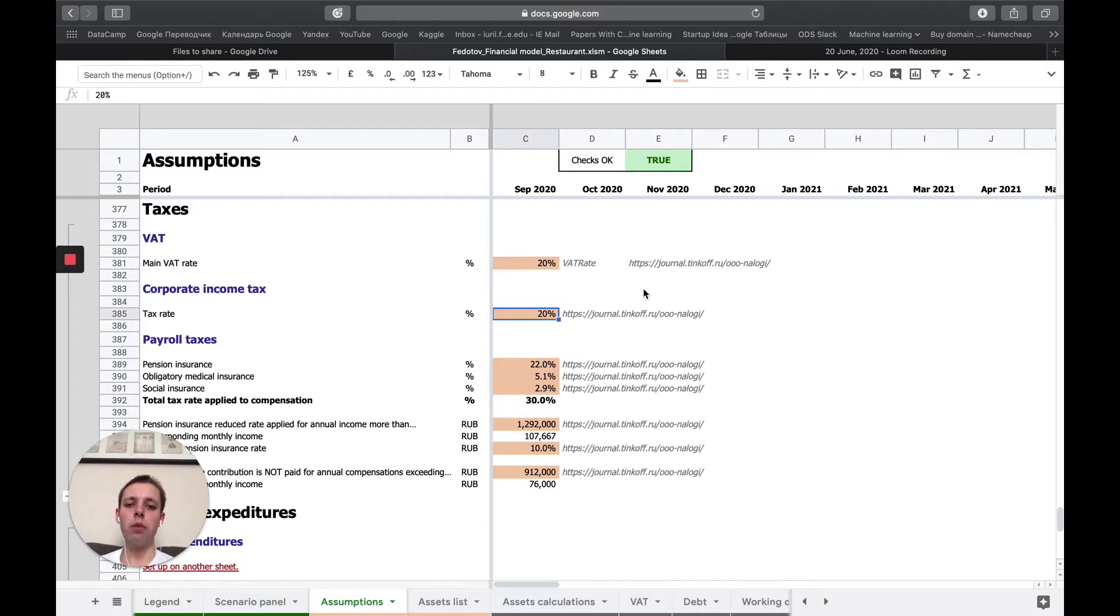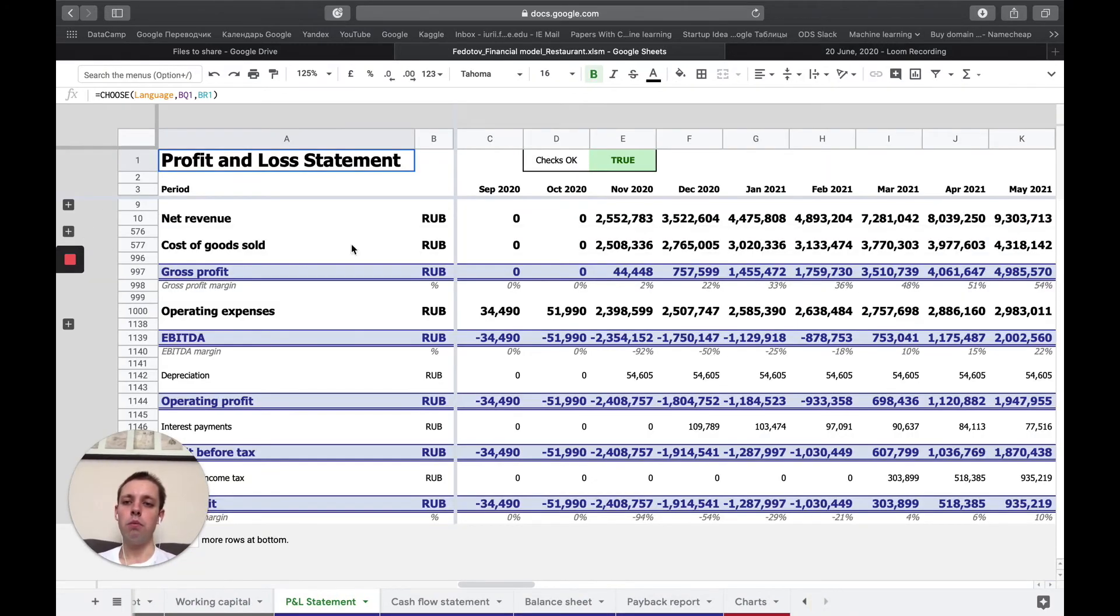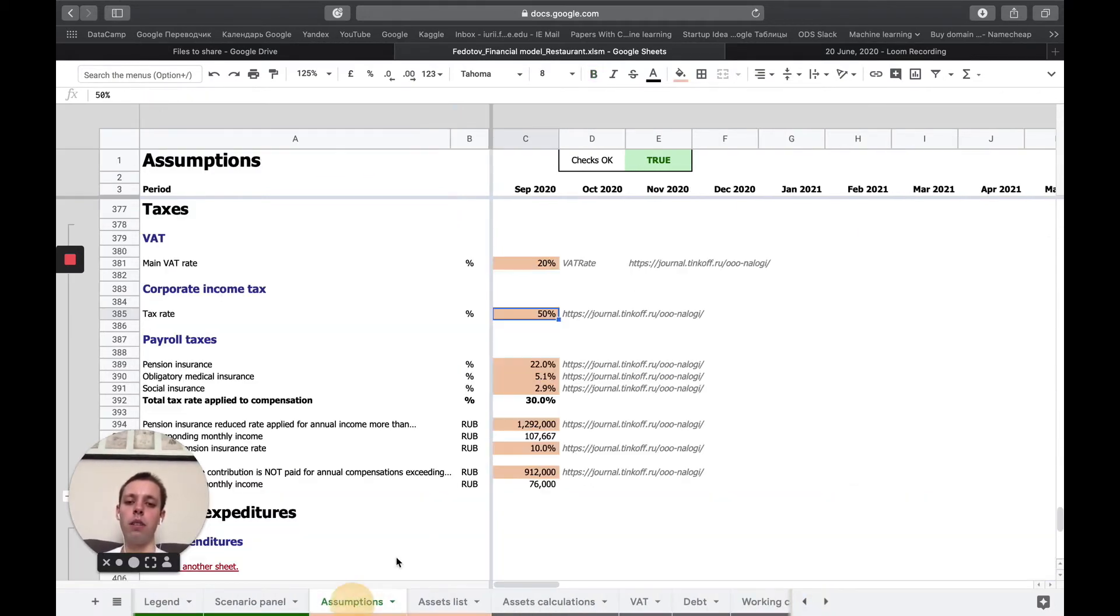If I change this 20% to 50%, I am sure that my calculations related to profits, related to cash flows, they are all being recalculated. It's very important that in the other spreadsheets, for example in the profit and loss statement, I don't need to insert it somehow here. Everything related to corporate income tax is linked to this cell.